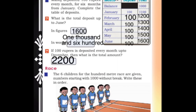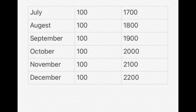If 100 rupees is deposited every month up to December, what is the total amount? From July to December, that is 6 more months. Each month is 100 rupees.